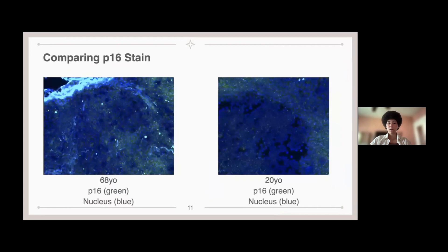So comparing the two samples, the 68-year-old and the 20-year-old for the P16, we can see in these images that the 68-year-old contains a lot more green dots and therefore P16 within the nucleus compared to the 20-year-old. And this indicates an increase in P16 with aging and an increase in senescent cells.